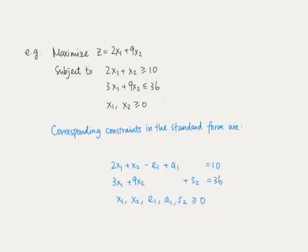According to our rules of transforming the constraints, the corresponding constraints of this problem in standard form would be: 2x1 plus x2 minus e1 (the surplus variable) plus a1 (the artificial variable) equals 10; 3x1 plus 9x2 plus s2 (the slack variable) equals 36; and we have all five variables to be non-negative.